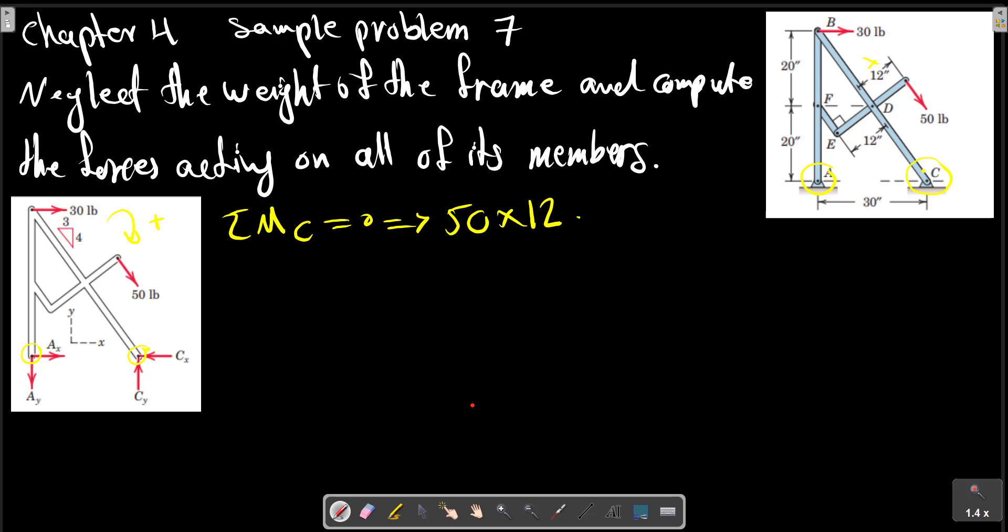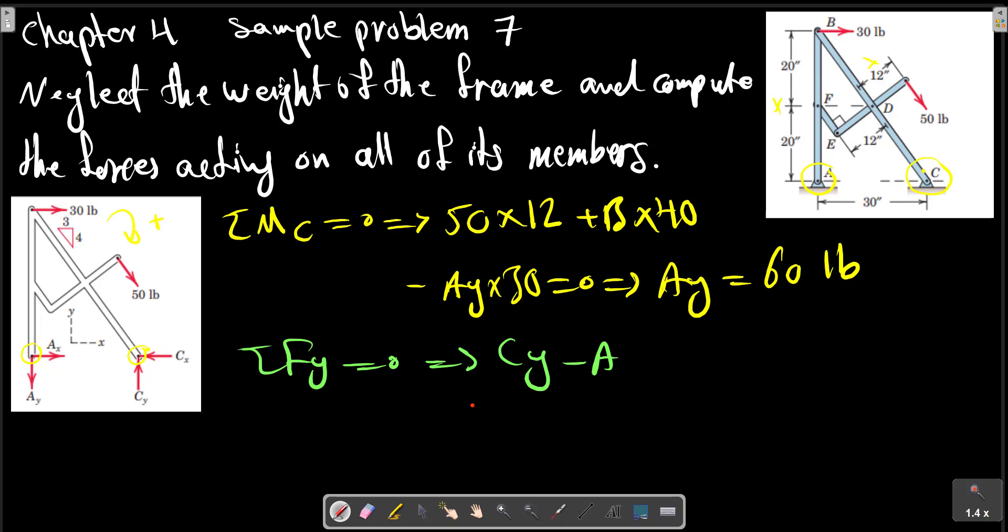B multiplied by vertical distance minus Ay multiplied. Ay can be calculated 60 pounds. Making the y-direction, Cy should be calculated Cy minus Ay.